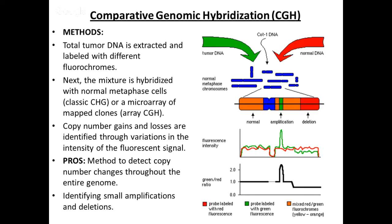Comparative genomic hybridization: we get total tumor DNA extracted and labeled with different fluorochromes. This is a grind-and-find method where you basically scrape the patient's tumor — that aliquot will contain fibroblasts, keratinocytes, inflammatory cells, in addition to tumor. That DNA is labeled with different fluorochromes and hybridized with either normal metaphase cells in classic CGH, or more commonly to a microarray of mapped clones in array CGH. Copy number gains and losses are identified through variations in the intensity of the fluorescent signal. You can see a spike indicating amplification or a dip below the control indicating deletion.